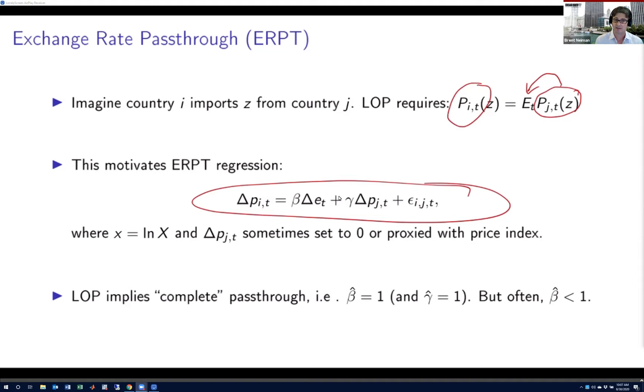If you take log differences, this motivates a pass-through regression of the kind I'm circling here in the middle of the screen. In principle, you should have the log change on the left-hand side of the import price—if I is the US and it's an importer in dollars—as a linear function, the sum of two linearly additive terms: the log change in the exchange rate, where this would be denoted as a dollar depreciation given the way we've defined E, and the change in the price abroad.